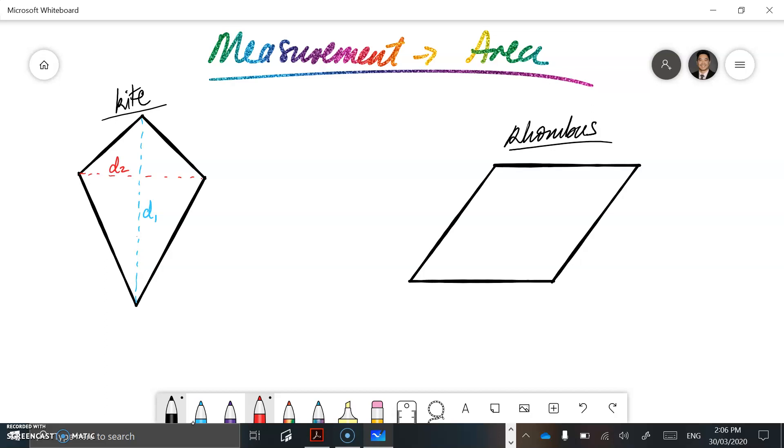The same thing with our rhombus, we could do exactly the same thing. We could have a dotted line that goes right across to one side. We'll call this D2, and then we could have one that goes right across there, and we'll call this D1.